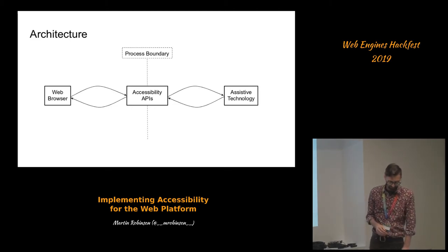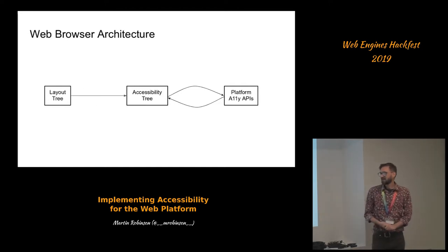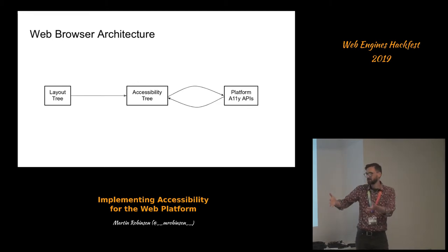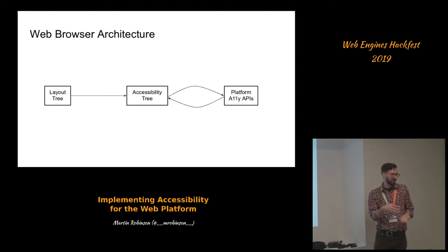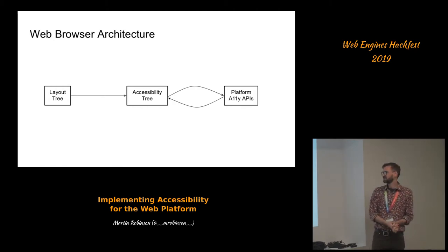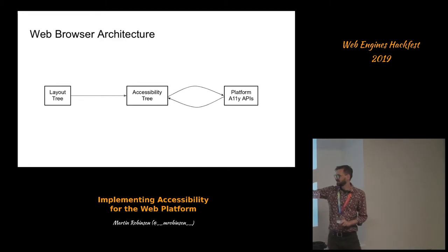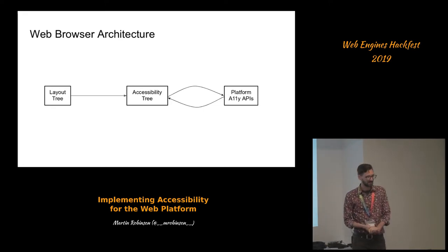So it's a two-way thing. Inside the web browser, typically you have the layout tree, or the flow tree, whatever you call it in your browser. And then typically there's another tree, which is the accessibility tree — a transformation of the layout tree into a tree that's useful for interacting with assistive technologies. This accessibility tree is then hooked in, in some way, to the platform accessibility APIs.